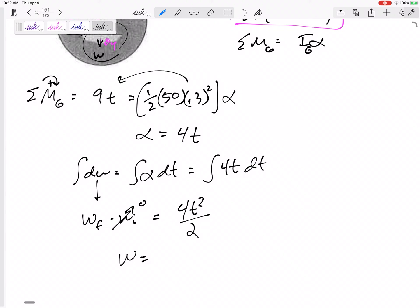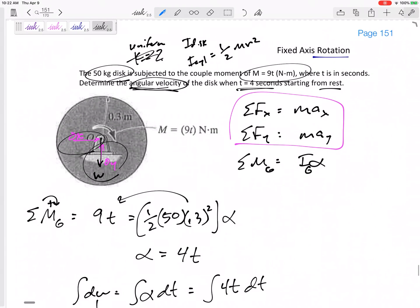Let's go ahead and write an equation for angular velocity: omega equals 2t squared, in case I wanted to integrate that again or something. But now it just wants that when t equals 4, so this would be 32 radians per second. If it started from rest and it's accelerating clockwise, this would be clockwise.